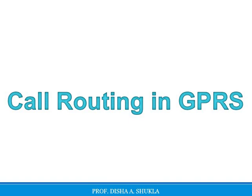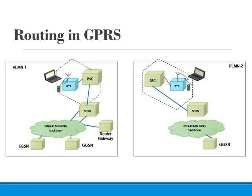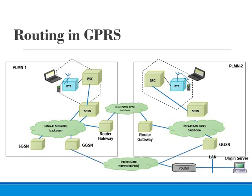A similar situation applies when a call is routed in GPRS. Let's see that in detail. Here we have two PLMNs, PLMN 1 and PLMN 2, both with their own architected networks. The GPRS MS is located in PLMN 1 and sends an IP packet to a host connected to the IP network. The SGSN that the MS is registered with encapsulates the IP packet and forwards it to the appropriate GGSN, which then de-encapsulates the packet and sends it out to the IP network, where IP routing mechanisms transfer the packet to the access router of the destination network.